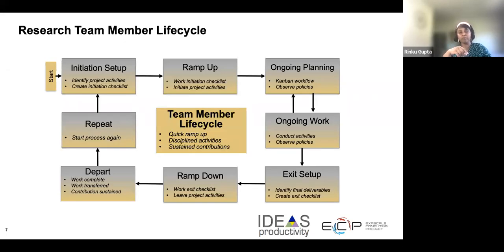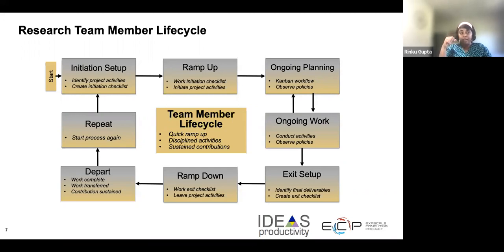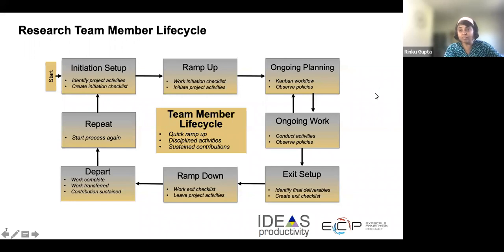This slide shows a research team member lifecycle. There is an initial setup phase, and then the team member starts ramping up. The ramp-up time depends on the experience of the team member and how solid the processes in place are — so ramp-up time can vary considerably. The next phase is when they are actively contributing, which you see in the ongoing work box on the slide. And when they are ready to exit, there should always be a ramp-down process. When you have a student or a postdoc, you have a fairly good idea of when they might exit, so arrangements should be made to have a replacement member so their contributions can be captured before they exit. Once they exit and a new team member joins in, this whole cycle is repeated again.